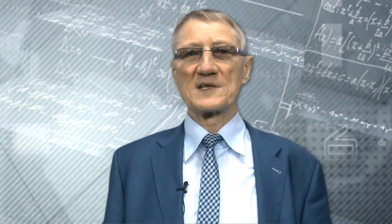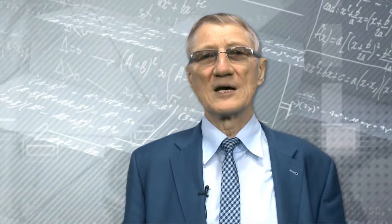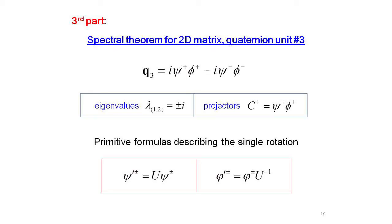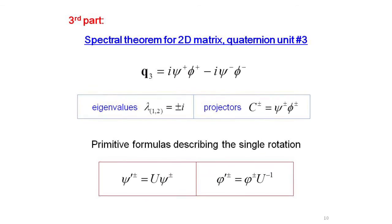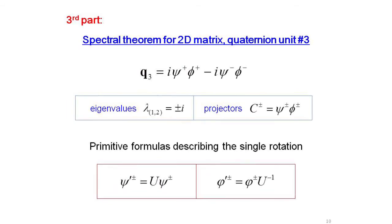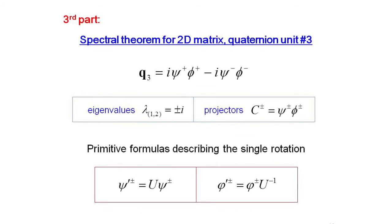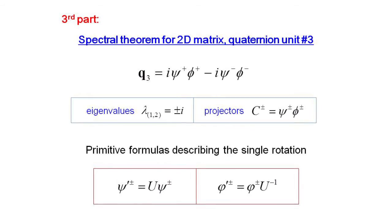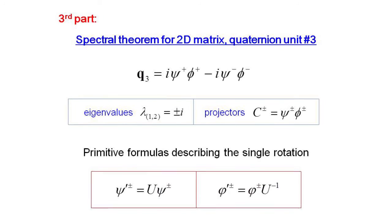In the third part of the paper, applications of the spectral theorem to two-dimensional matrices representing vector quaternion units gives a much simpler mathematical expression, namely square roots from similarity transformation, and these primitive formulas are equivalent to those of the single rotation method.